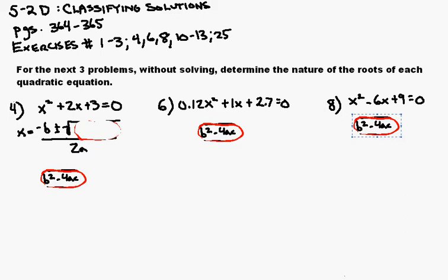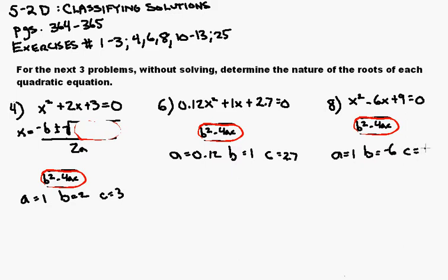The first thing we need to do is determine a, b, and c for each quadratic equation. For number 4, a equals 1, b equals 2, and c equals 3. For number 6, a equals 0.12, b equals 1, and c equals 2.7. For number 8, a equals 1, b equals negative 6, and c equals 9.